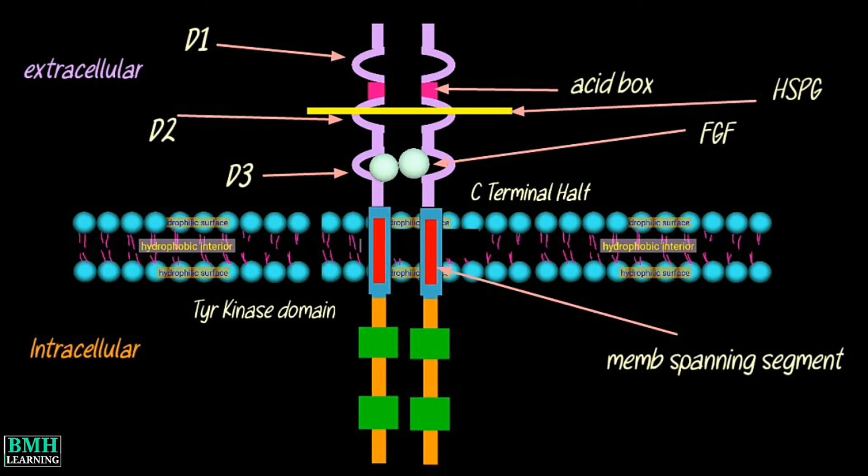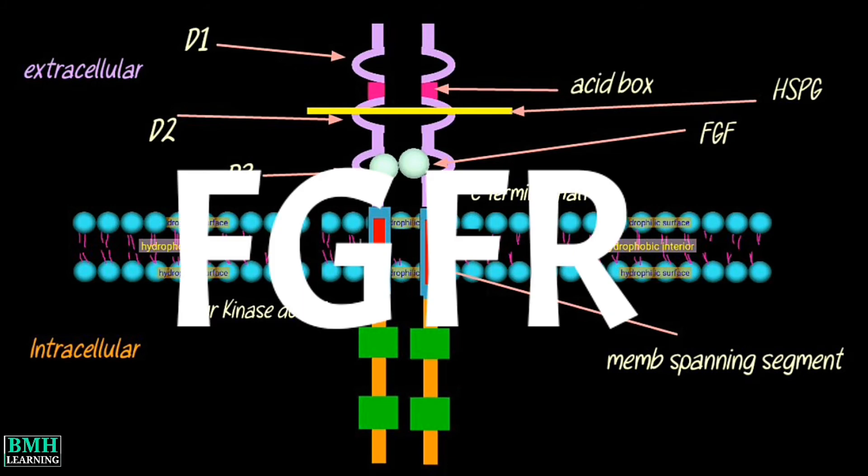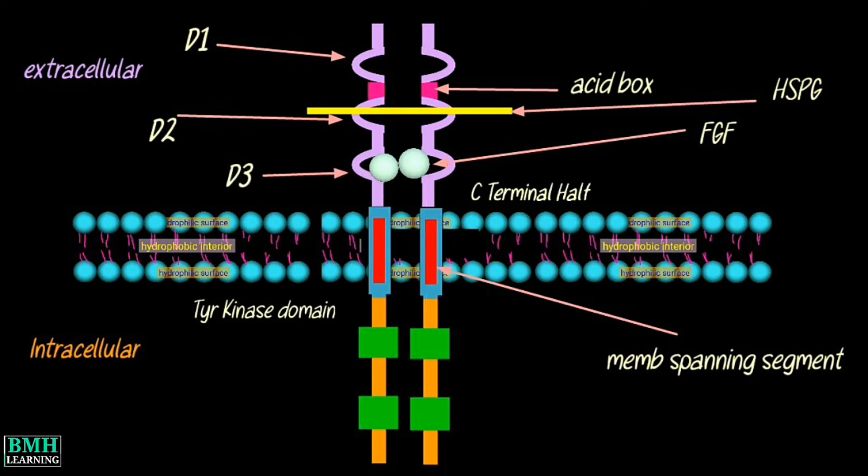Structure: A full length, representative protein consists of an extracellular region composed of three immunoglobulin-like domains, a single hydrophobic membrane spanning segment, and a cytoplasmic tyrosine kinase domain.